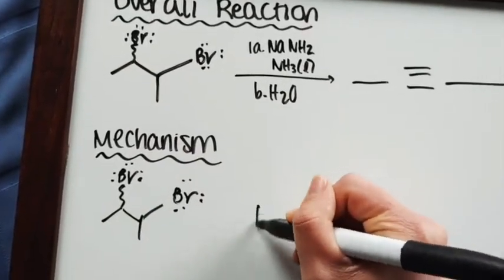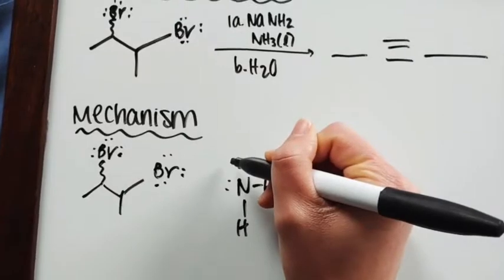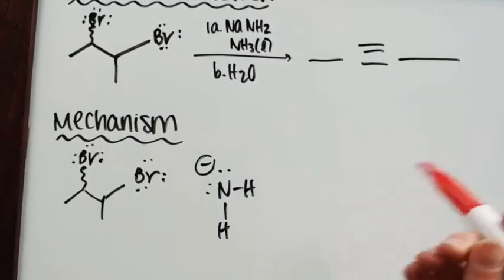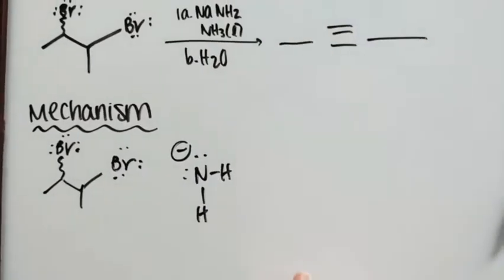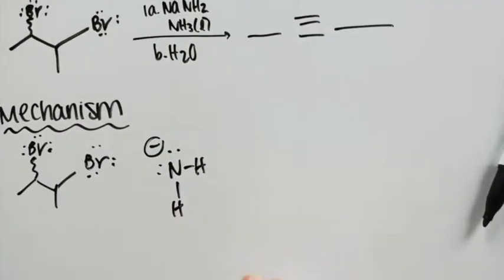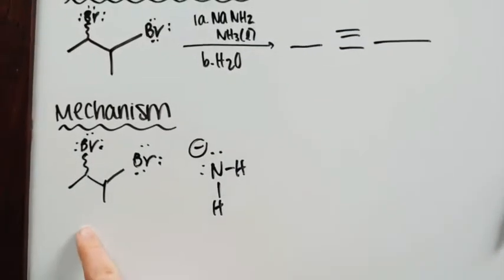Alright, so what we have is we want to draw out our NH2 minus and don't forget that it has a negative charge on it. So what we're going to do is the nitrogen is actually going to attack the hydrogen that is attached to one of the bromines and remember that it doesn't matter which bromine we pick.